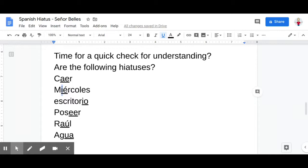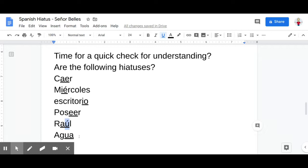This one, escritorio, so there's no accent mark on that I, so it's not a hiatus. And then this one, raúl, there's an accent mark on the weak vowel, so that one is a hiatus. And the last one, agua, there is not an accent mark on the weak vowel, so that one is not a hiatus. Hopefully it makes some sense.